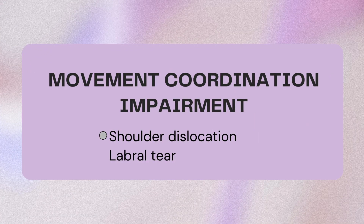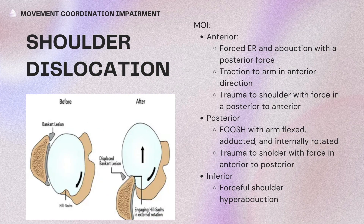Movement coordination impairment involves impairments with either the passive or dynamic stabilizers. Passive structures include ligaments, the joint capsule, and labrum. Dynamic structures include muscles and neuromuscular control. Impairments with passive structures lead to hypermobility, while impairments with dynamic structures result in weakness of those muscles.